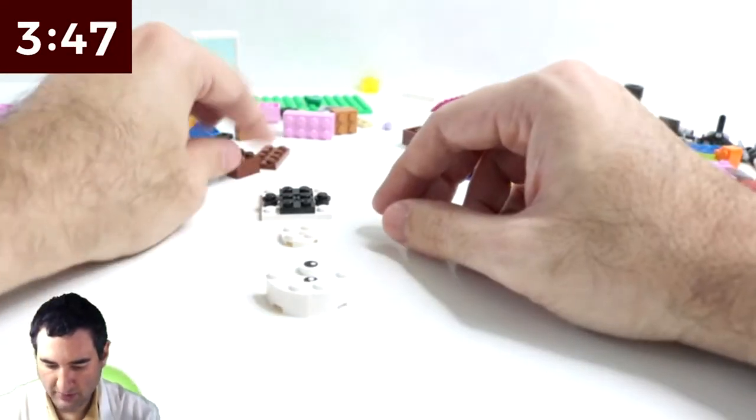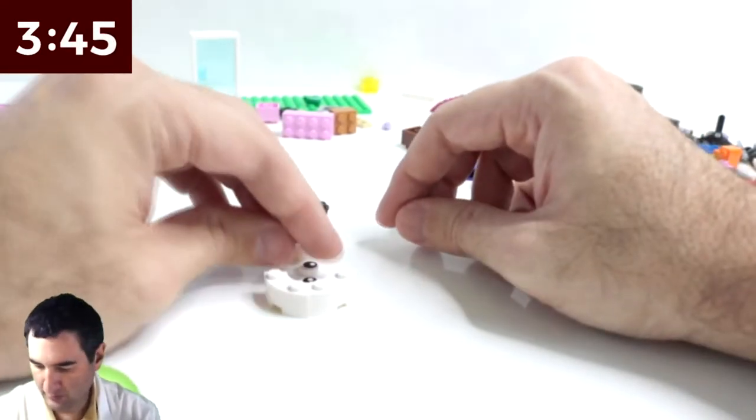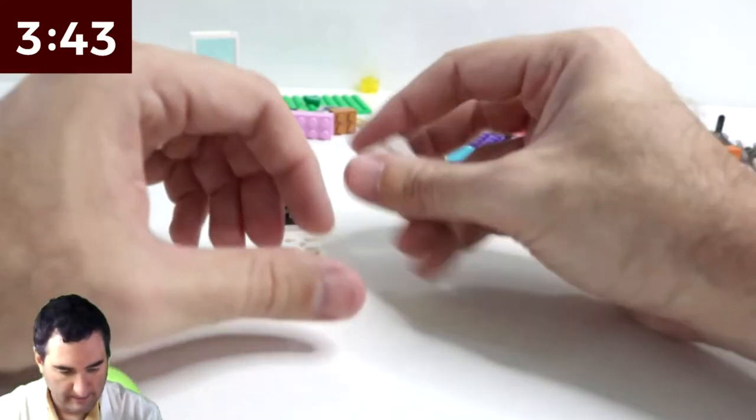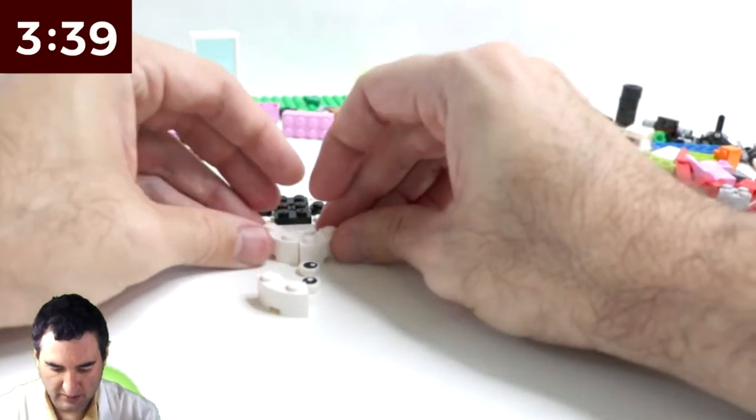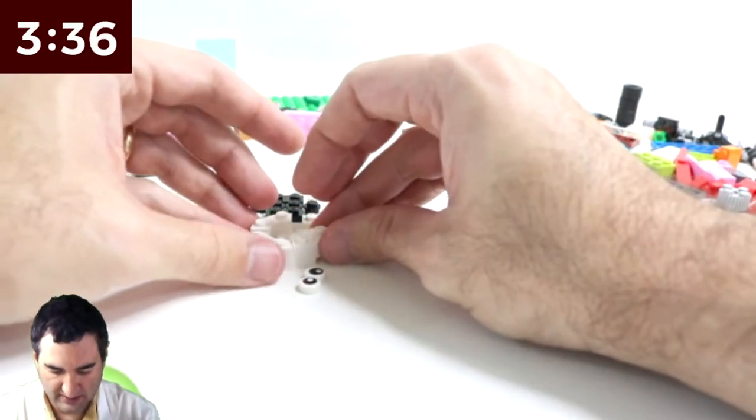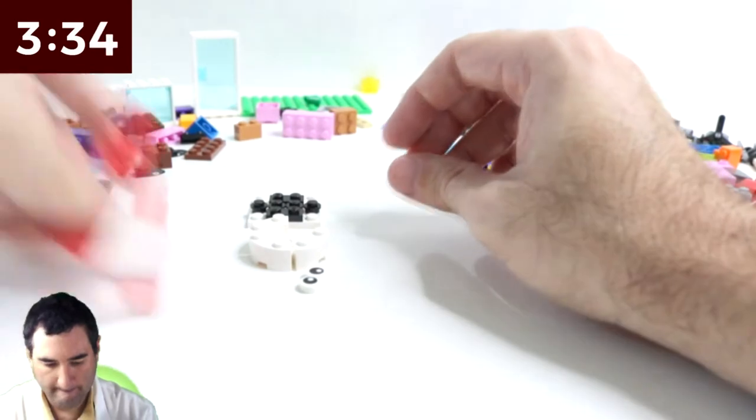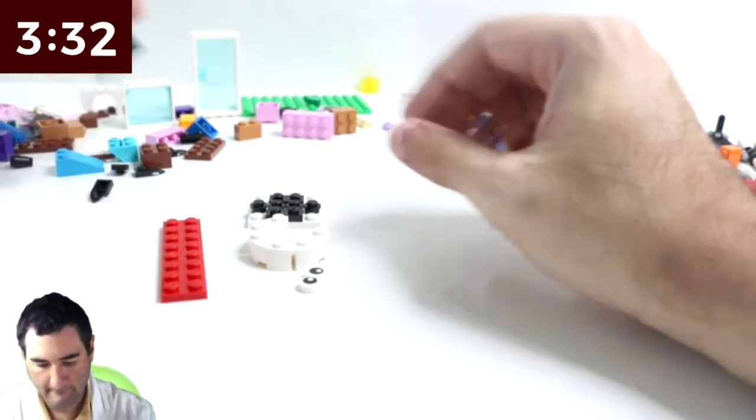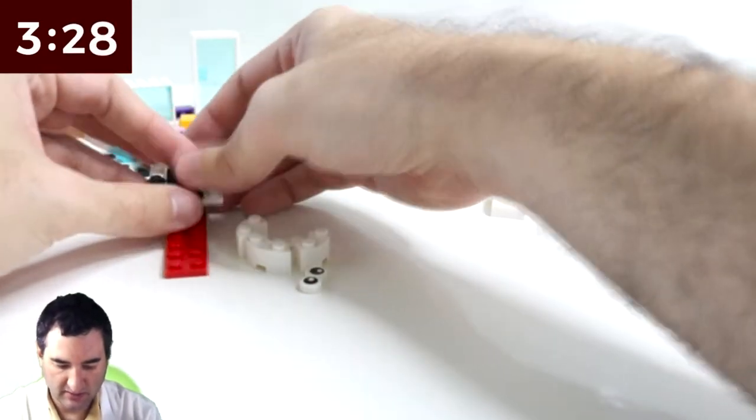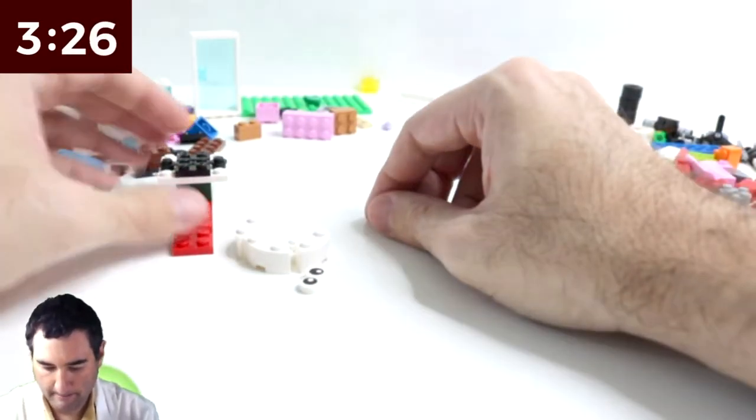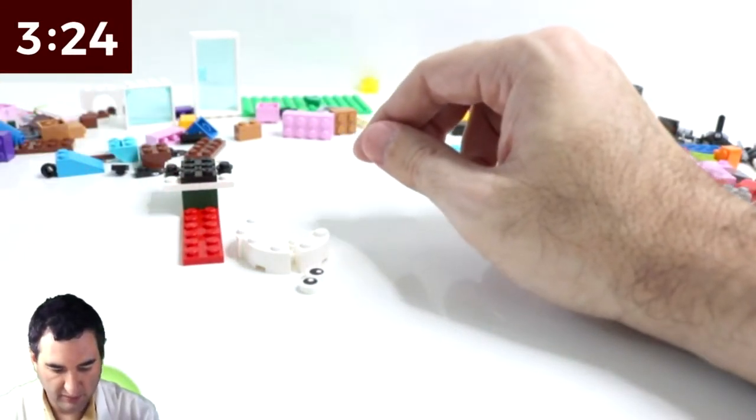Okay so now how do we build up the bottom of the Wiimote. I mean I could do that as well. I got enough white pieces. So if I do something like that. We're already starting to beef it up a little bit.